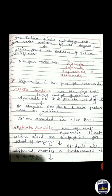The next Ayurvedic literature is the Sushruta Samhita, which focused on surgery — it is for the school of surgery. It deals with different theories and fundamental principles of surgery and described about 650 drugs. It covers surgery-related topics like anatomy, toxicology, and emeralogy, and also describes the use of various surgical instruments such as scissors, scalpels, and forceps.